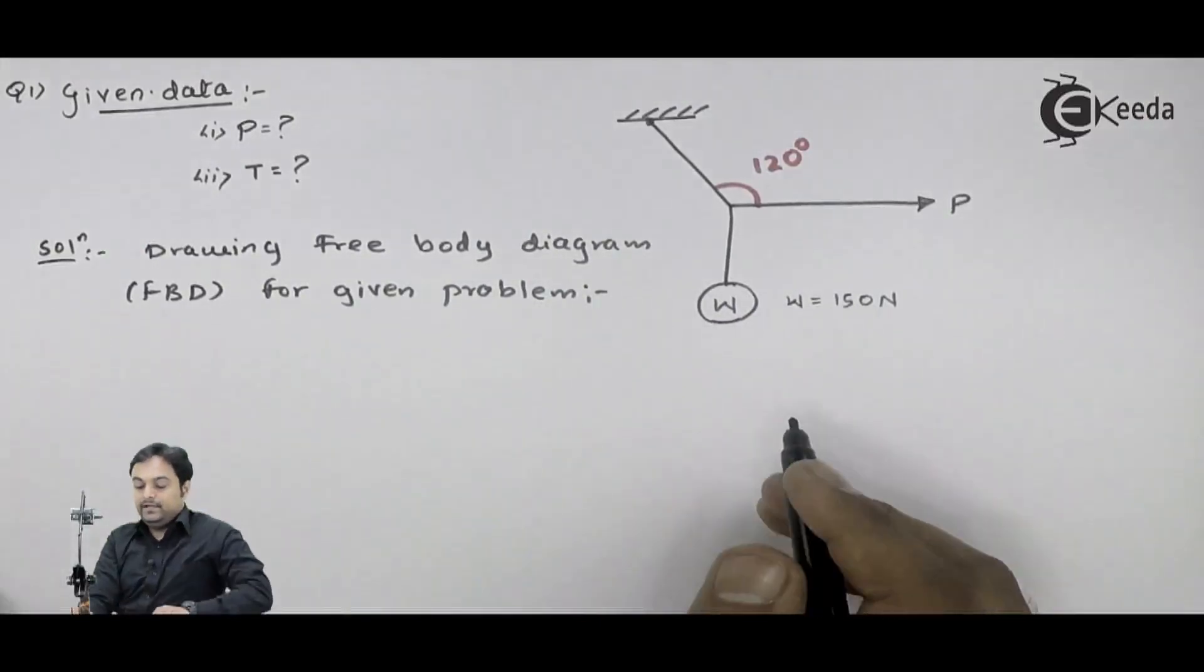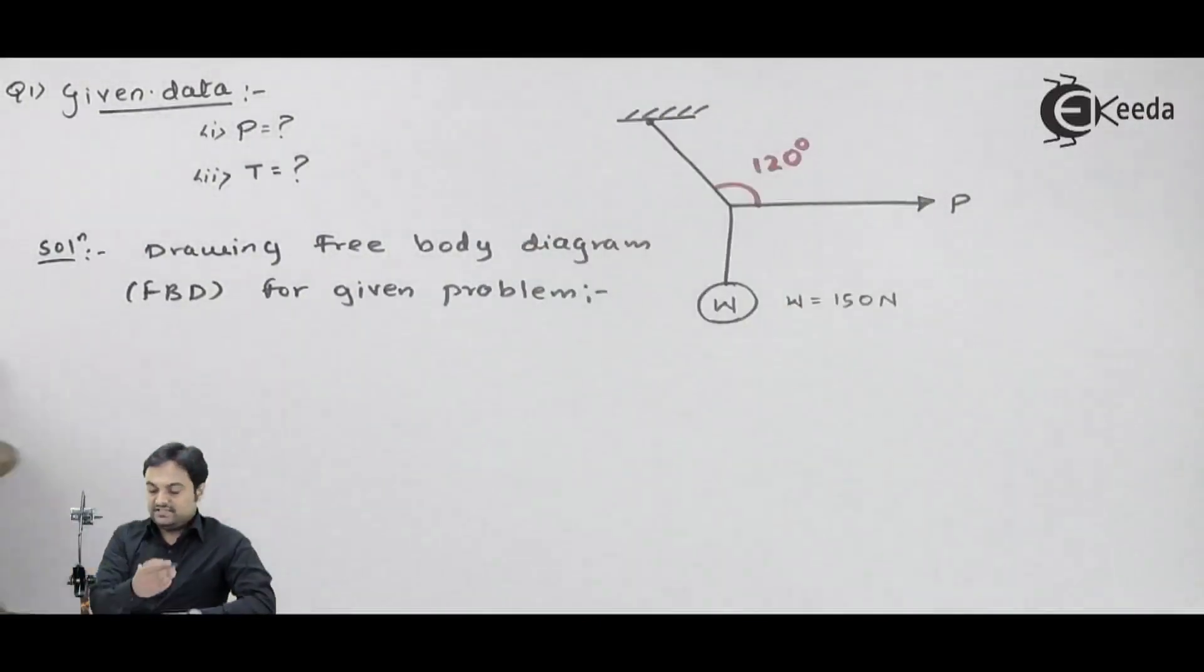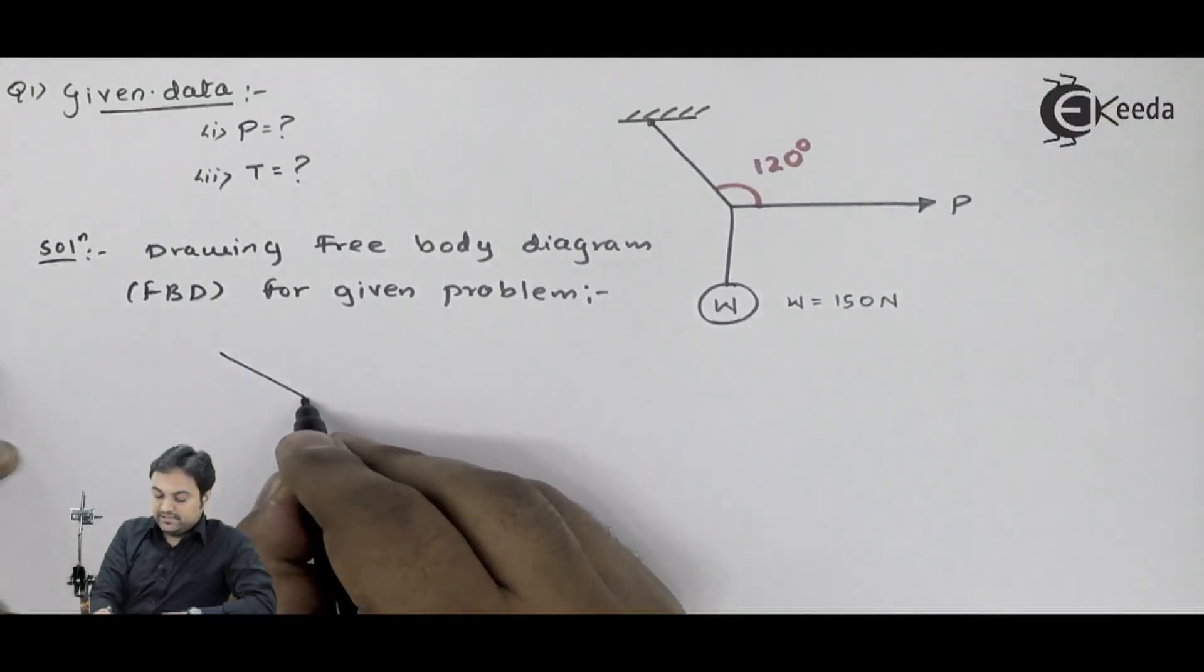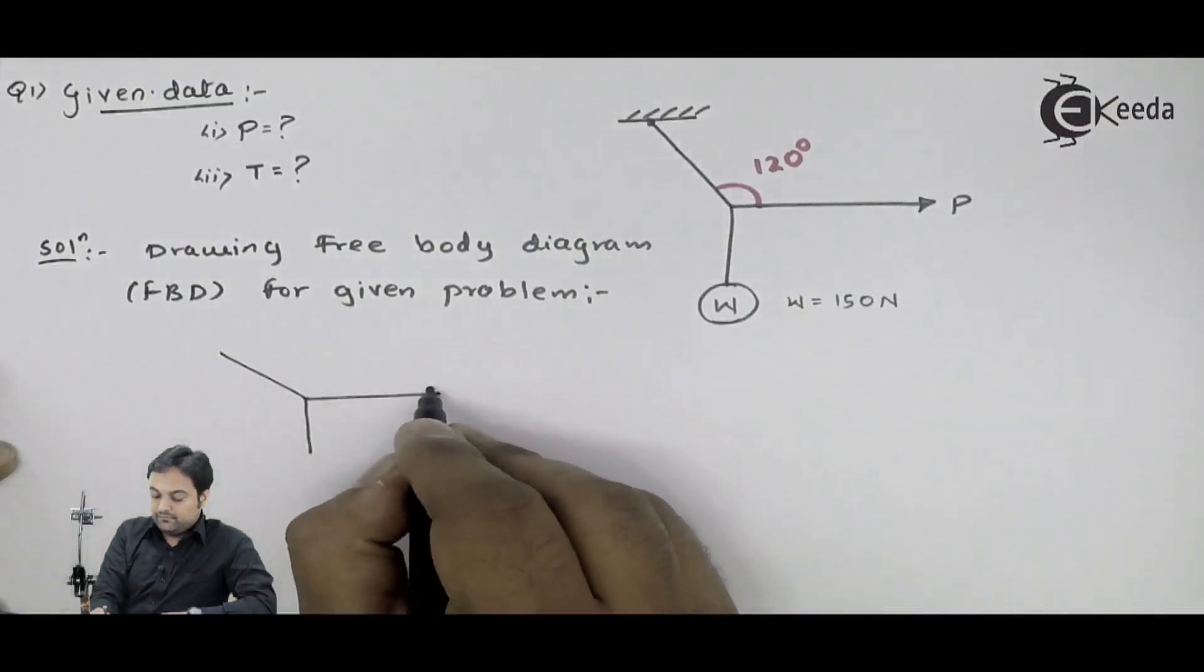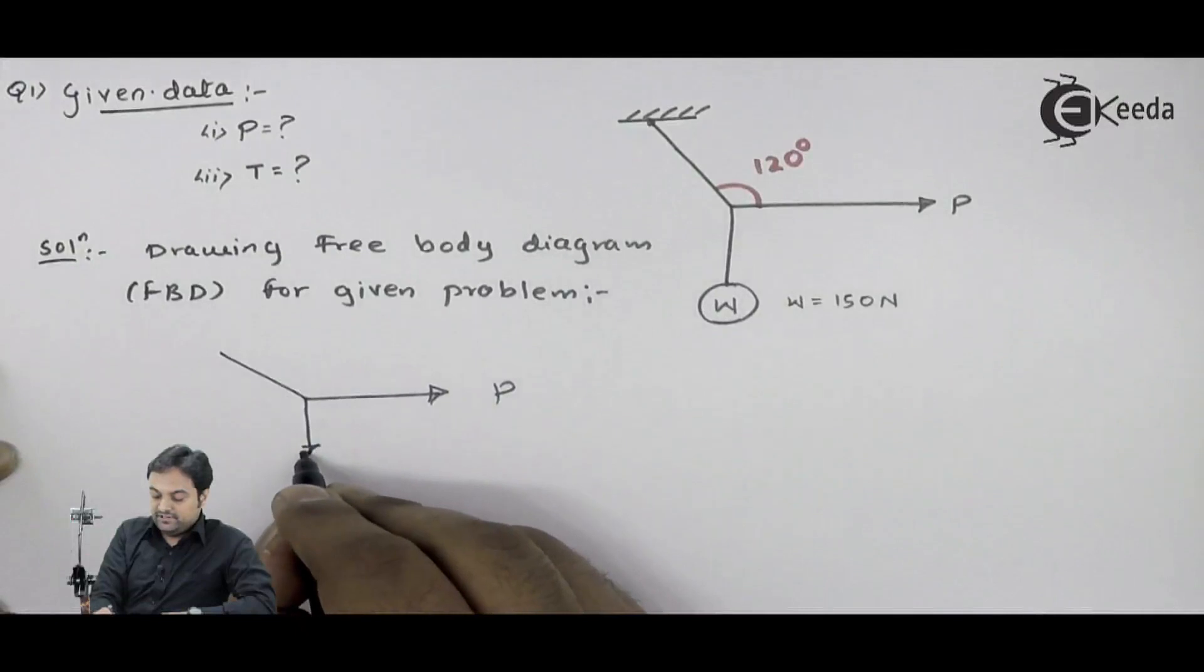If we draw the FBD, FBD means we have to replace this ceiling. So we can replace the ceiling. Force P is applied horizontally. Weight is acting downward.